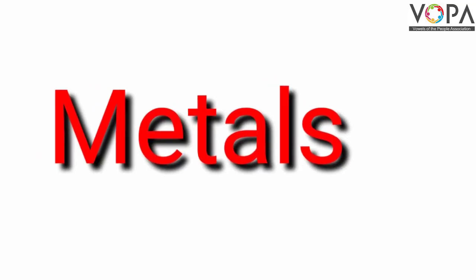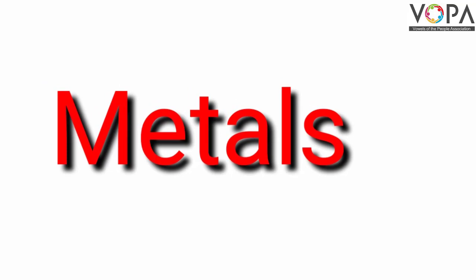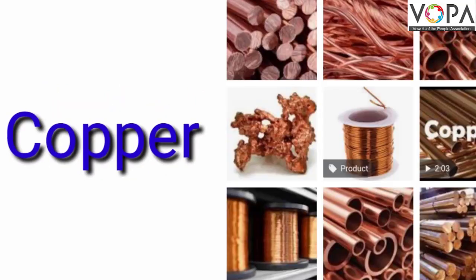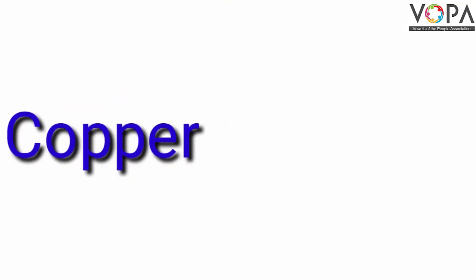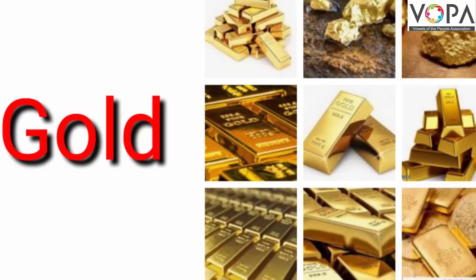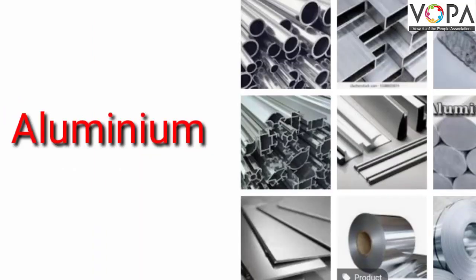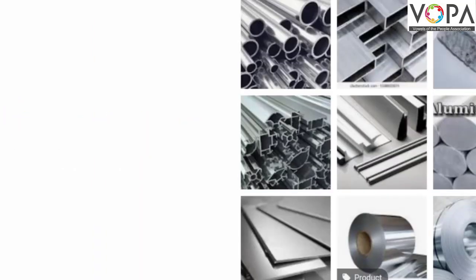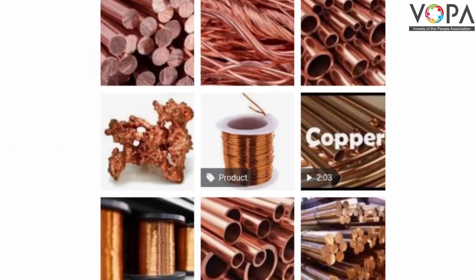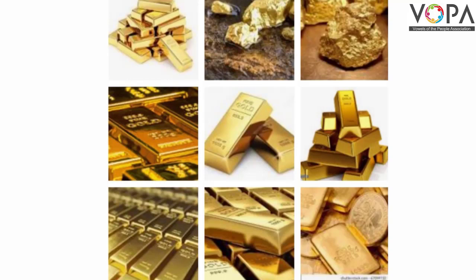Students, look at these some metals: Copper, Gold, Iron, Aluminum are called metals. Metals are found in the form of minerals deep inside the earth. Minerals from the earth are crushed or processed to obtain the metal.